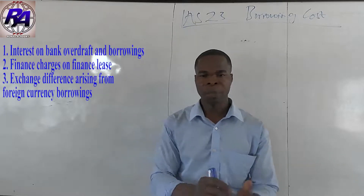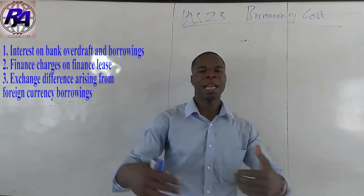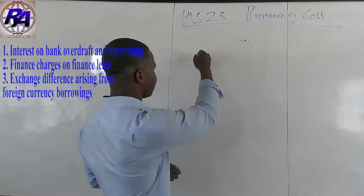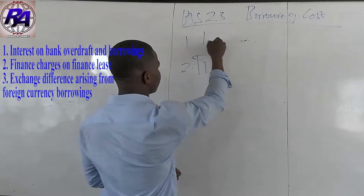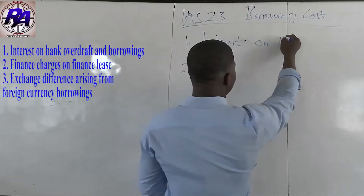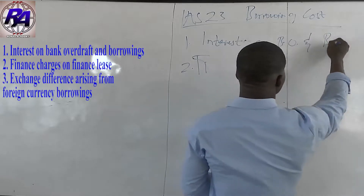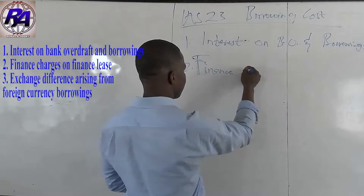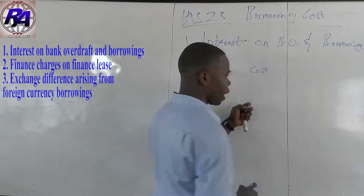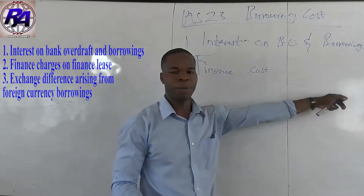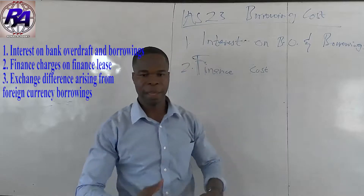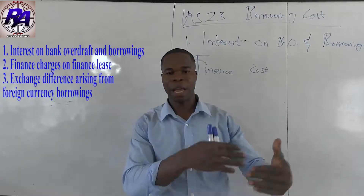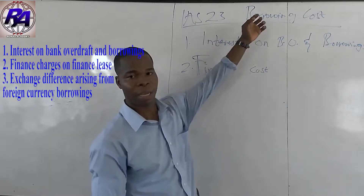Examples of borrowing costs include: first, interest on bank overdrafts and other borrowings. Second, finance costs charged on leases — that is, finance leases or leases. The interest or finance cost that an entity will pay on the leasing of an item, property, or asset is also an example of a borrowing cost.